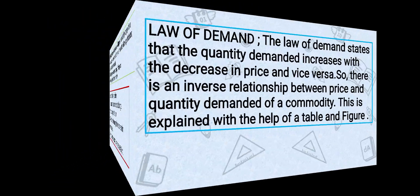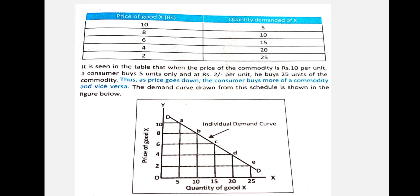Looking at the table of price of good X and quantity demanded: when the price is highest at Rs. 10 per unit, demand is low at 5 units. When the price of a good is lowest, demand is higher. This illustrates the law of demand — price and demand move in opposite directions.